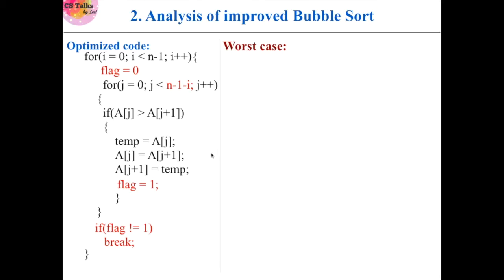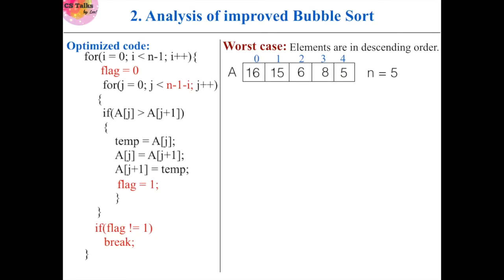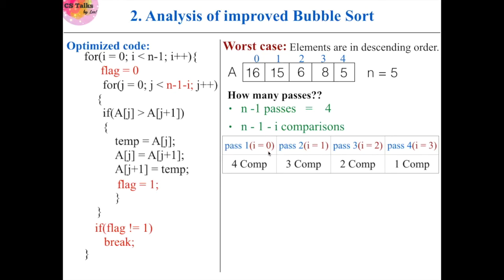The worst case for optimized bubble sort occurs when elements are in descending order, requiring swaps in every iteration. We do n-1 passes with n-1-i comparisons per pass. In pass 1 (i=0) we do 4 comparisons, in pass 2 we do 3, in pass 3 we do 2, and in pass 4 we do 1. After each pass, one comparison is reduced — unlike standard bubble sort which always does n-1 comparisons. Here we do only 10 total comparisons to sort the array.